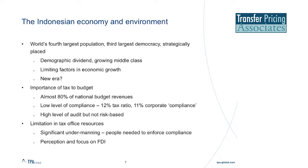Specifically in relation to today's topic, it should be noted that almost 80% of the government budget comes from the tax take, and that is from a very low level of compliance — consistently only a 12% tax-to-GDP ratio, although the new government has a target to increase that to 16% within five years. Of 5 million registered corporate taxpayers, only 11% are thought to be fully compliant. The result is that those that are compliant will bear an unfair burden.